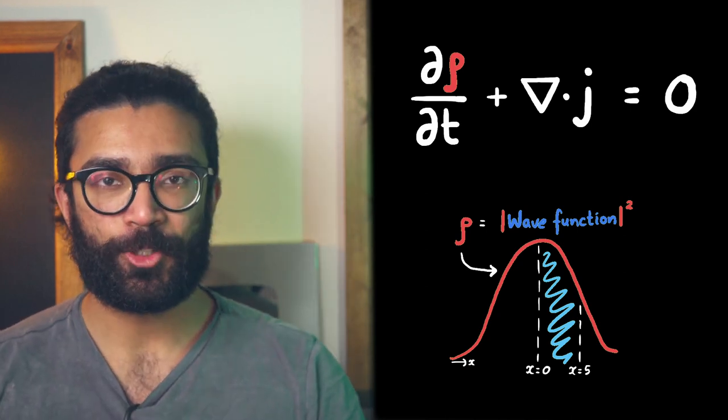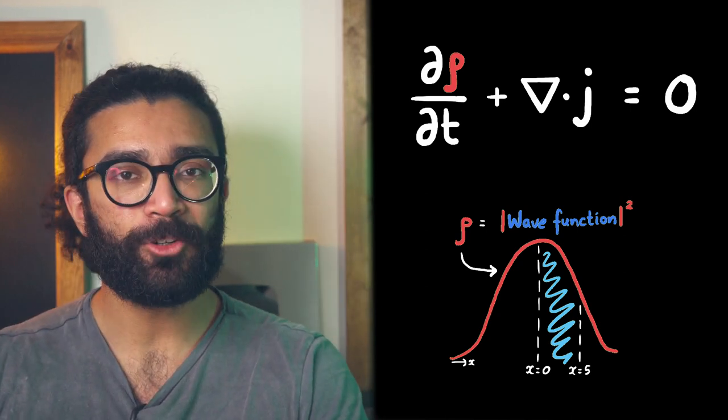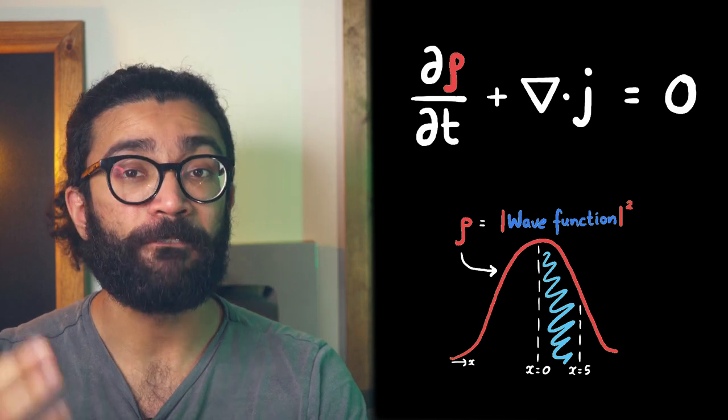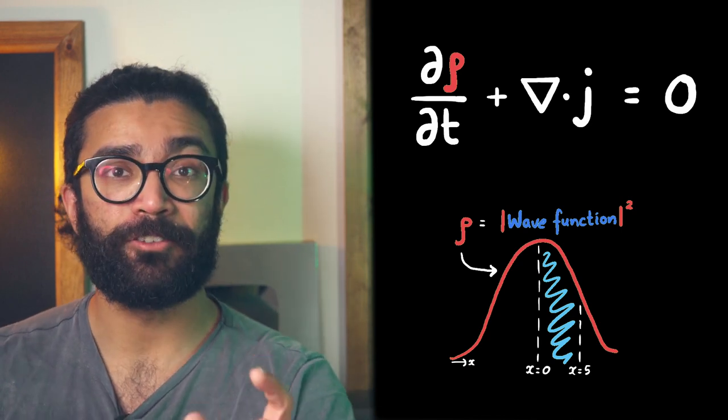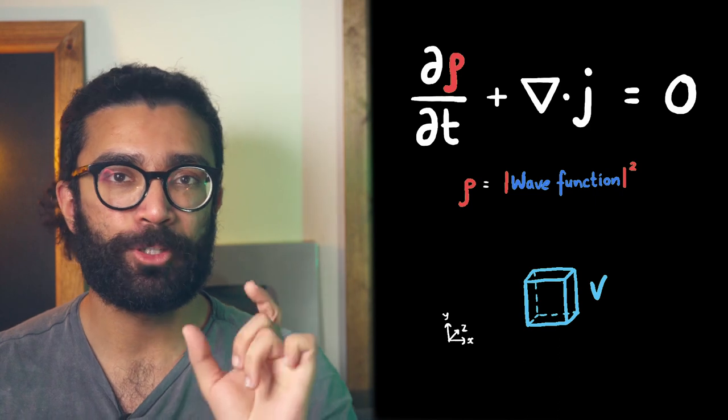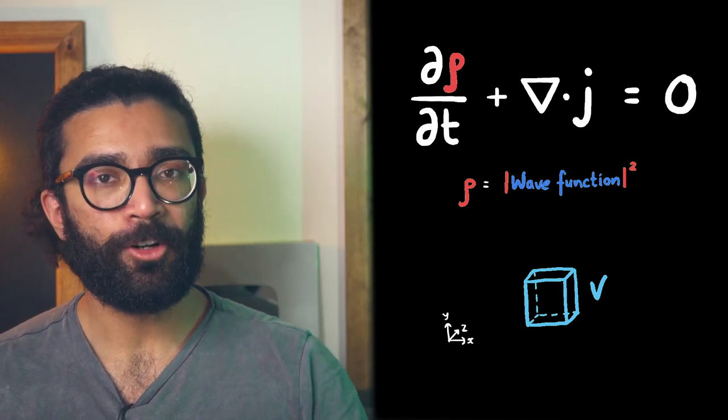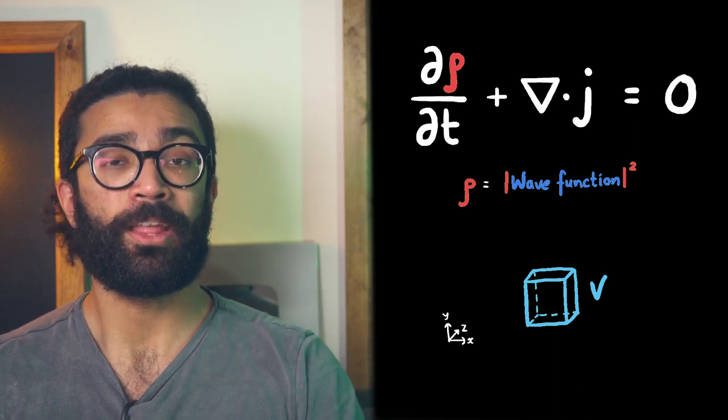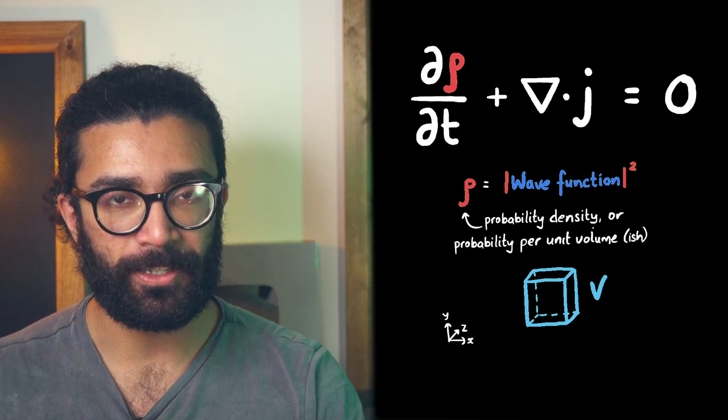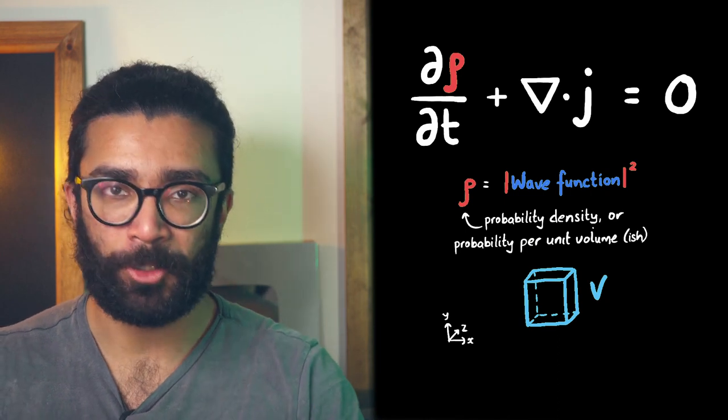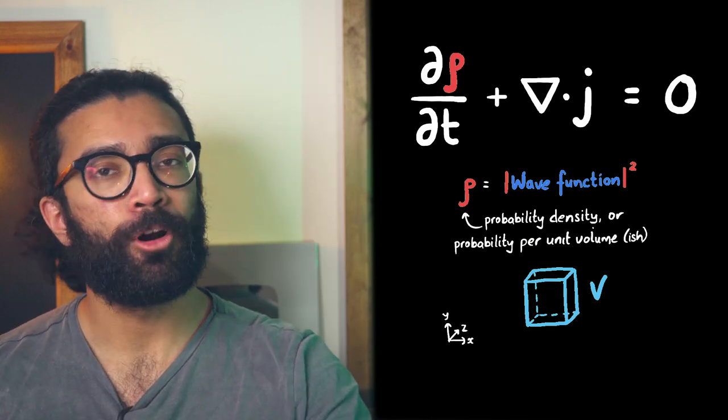If we extend this logic to multiple dimensions then we can essentially calculate the probability of finding our particle in a given volume rather than between two points on a straight line. And as a result of this we can think of rho, or the square modulus of the wave function, as a probability density. The probability per unit volume. So that's what rho represents.